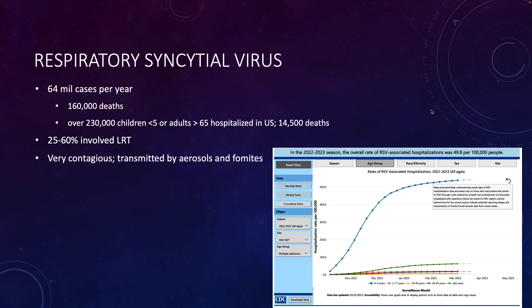In patients who acquire the infection, for the most part it's going to stay in the upper respiratory tract — a relatively mild infection. However, in some patients, anywhere from 25 to 60% depending on the year and the patient, you can get involvement of the lower respiratory tract. It is very contagious, transmitted by aerosols and fomites. Data shows a very worrying trend — a 20 to 30-fold increase in patients, especially children ages zero to four, hospitalized with RSV since around October 2022.